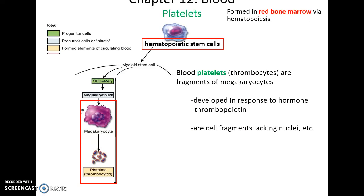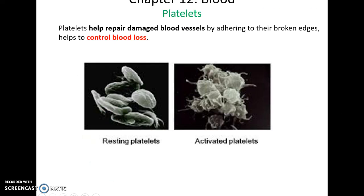Platelets are also produced in the red bone marrow via hematopoietic stem cell division. The stem cells become large megakaryocytes, which then bleb off little bits of their cells — those bits are the platelets. Platelets are not true cells. An increase in platelet production is caused by the release of the hormone thrombopoietin. Platelets help repair damaged blood vessels by adhering to the broken edges and controlling blood loss.